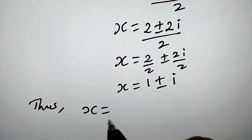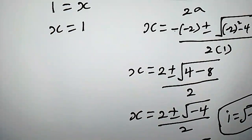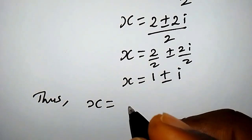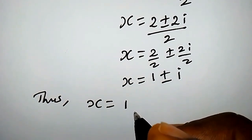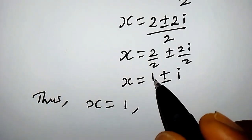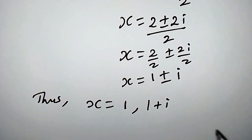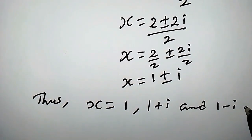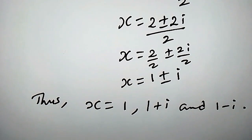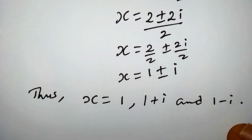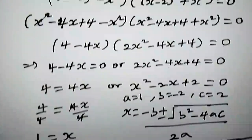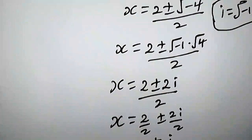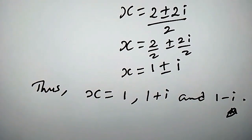So the solutions are: x equals 1, x equals 1 plus i, and x equals 1 minus i. These are all the possible solutions for this quartic equation. That is it — see you in the next video!